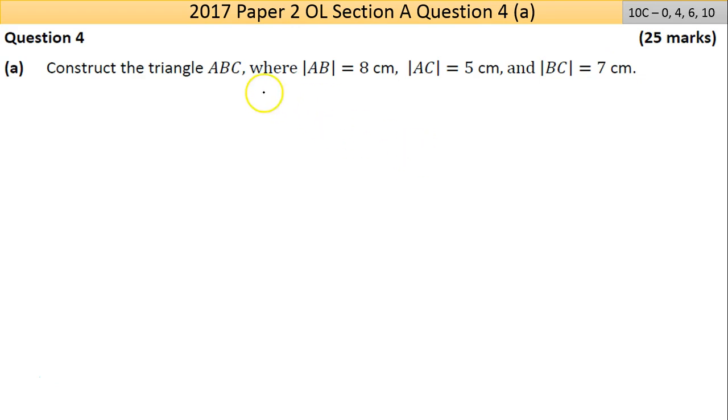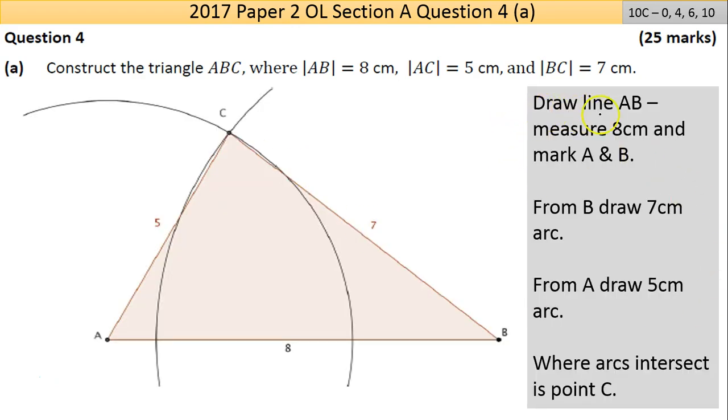This is a standard construction. There are certain constructions in previous notes I have linked to with digital versions of different constructions being done for you. On the next page here, draw a line AB, and that's 8 centimeters. That's your starting point.